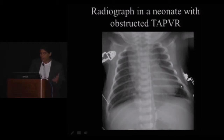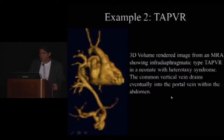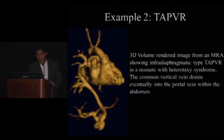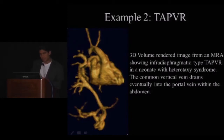A typical radiograph in a patient with obstructed TAPVR shows an enlarged heart with interstitial edema on both sides, typically presenting in the first week of life. Many of these are associated with underlying heterotaxy. In this setting of TAPVR, MR angiography has been very helpful in showing the anatomy of the anomalous pulmonary venous connection, which is the main clinical question in these infants early on.